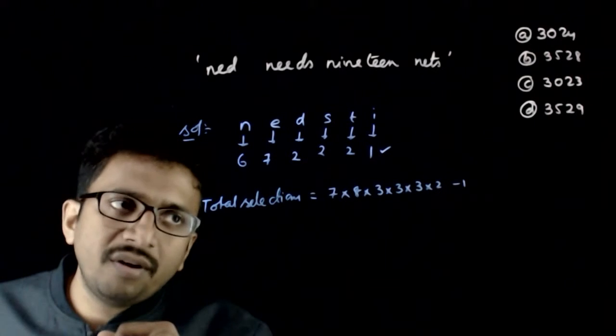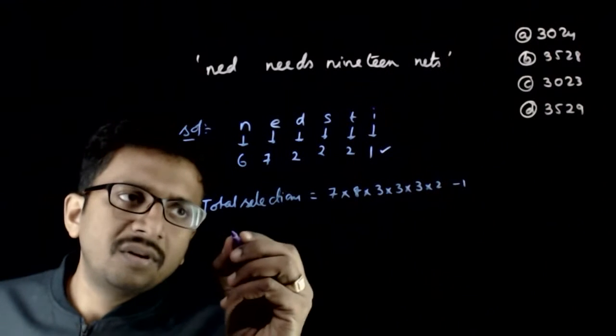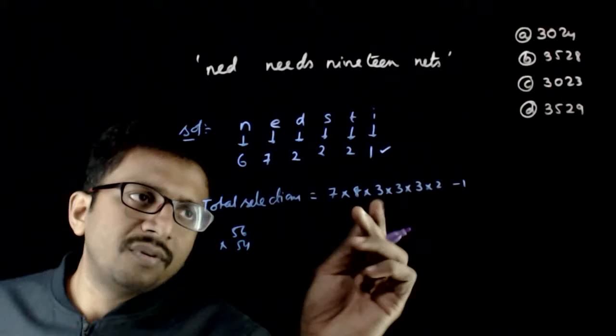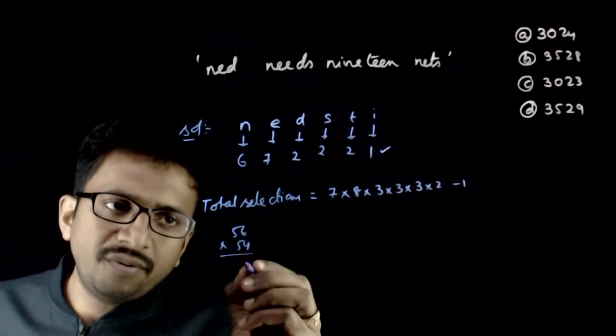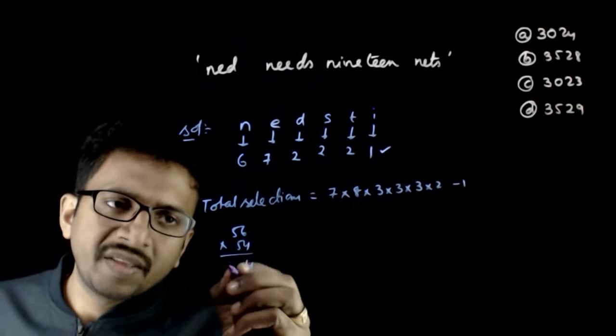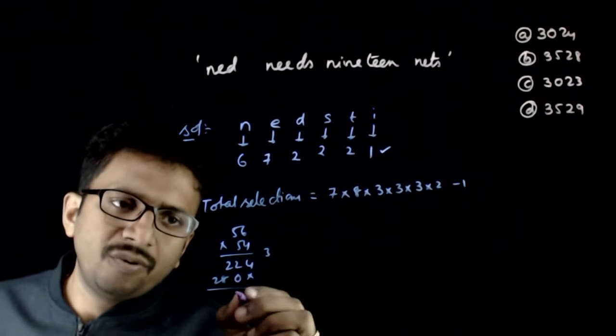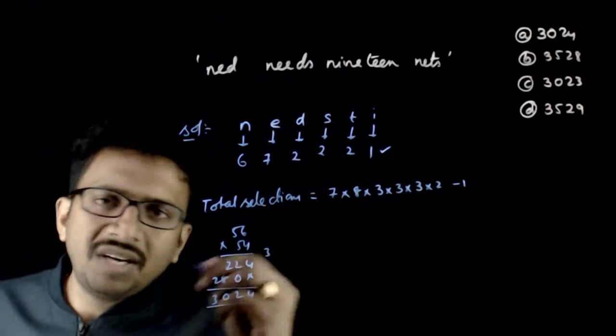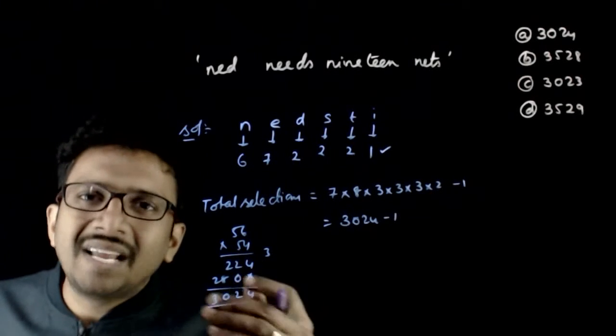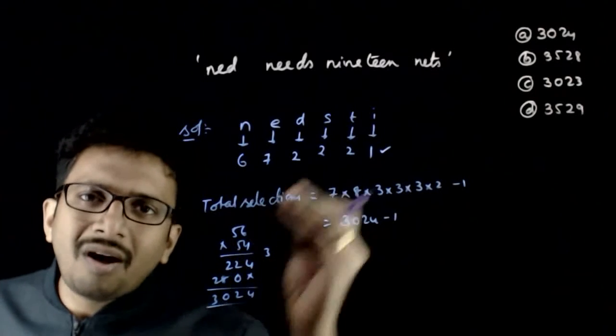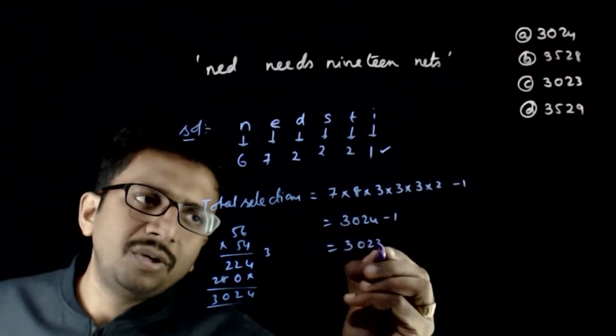So this gives you the total number of selections. That is 7 times 8 is 56 into 54. This is 56 into 54 minus 1. So if you take 56 into 54, you get 3,024. So 3,024 minus 1. That is if I need at least one letter. Excluding all the letters also comes in 3,024. If I remove that, I get 3,023.